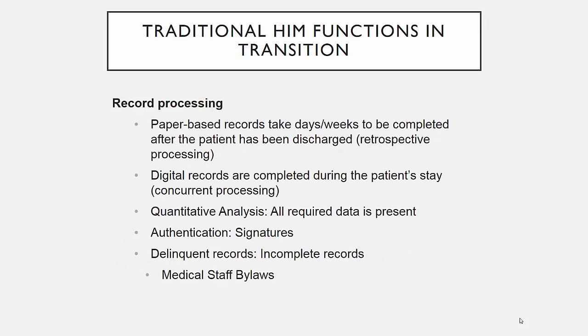First, let's talk about record processing. In the paper world, if a patient is admitted to the hospital, the HIM team would gather the old record and send it to the current unit. The care team would complete that record while the patient was under their care. Once the patient was discharged, the record would be finished and then moved to the HIM department for review. The HIM department would complete a quantitative analysis to make sure all required documentation is there, including notes as well as signatures, also known as authentication. If it's not done, the record is deficient and the care team must fix the errors before anything further can be done.